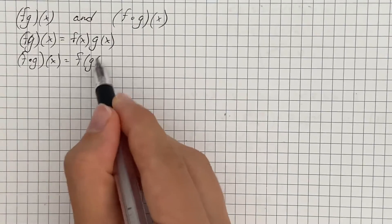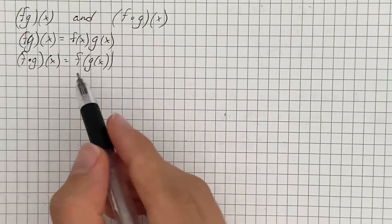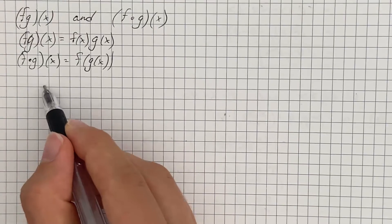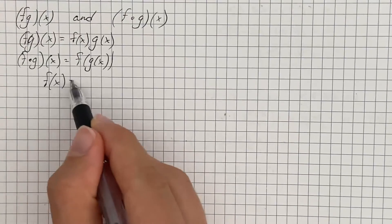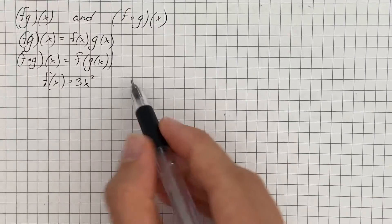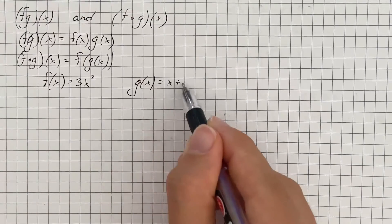So, for example, let's say the first function f is 3x squared and g equals x plus 1.